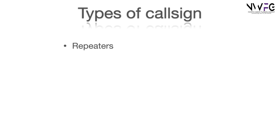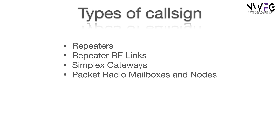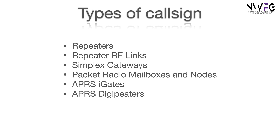So let's have a look at the types of callsign you can hold. The first one, the obvious one, is repeaters. You can also have a radio frequency link for a repeater in order to get internet to a remote site that doesn't have internet on it. There are simplex gateways, packet radio mailboxes and nodes which allow access further afield to the packet radio mailbox, APRS iGates, APRS DigiPeaters and pagers. So let's have a look at them individually.